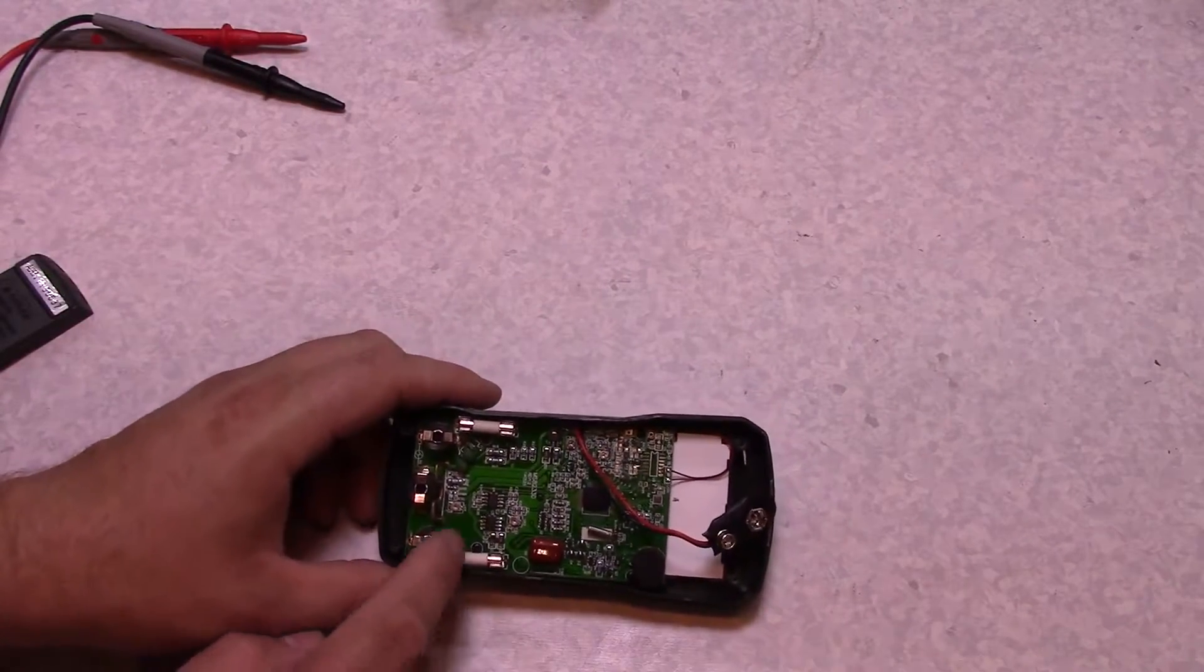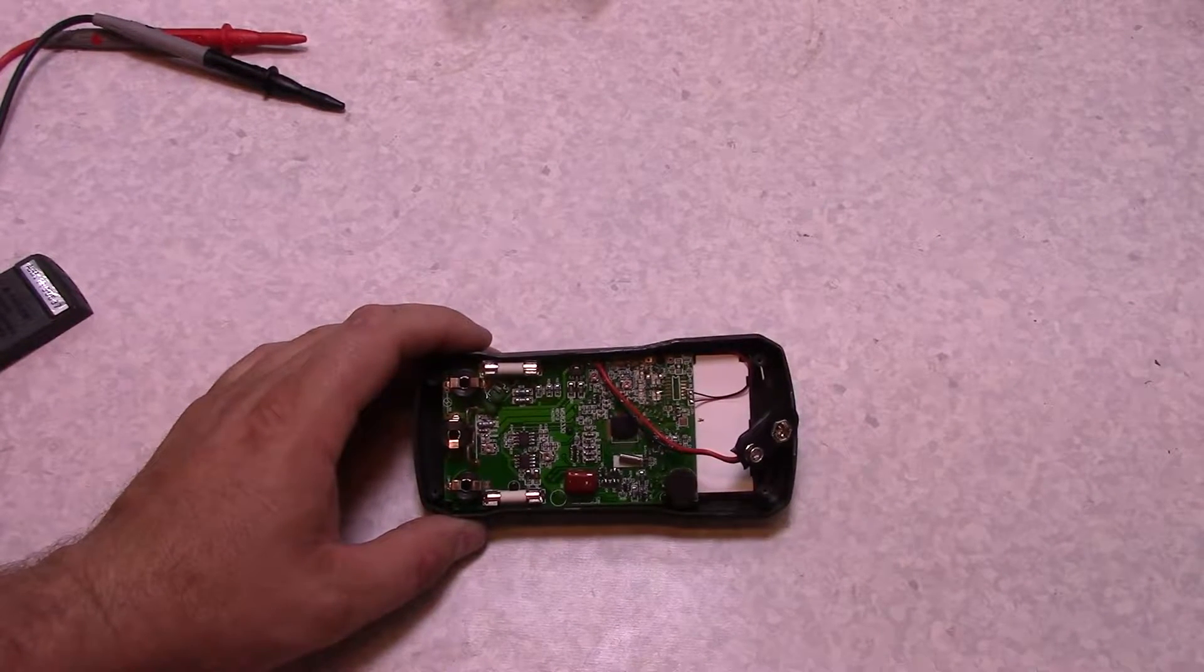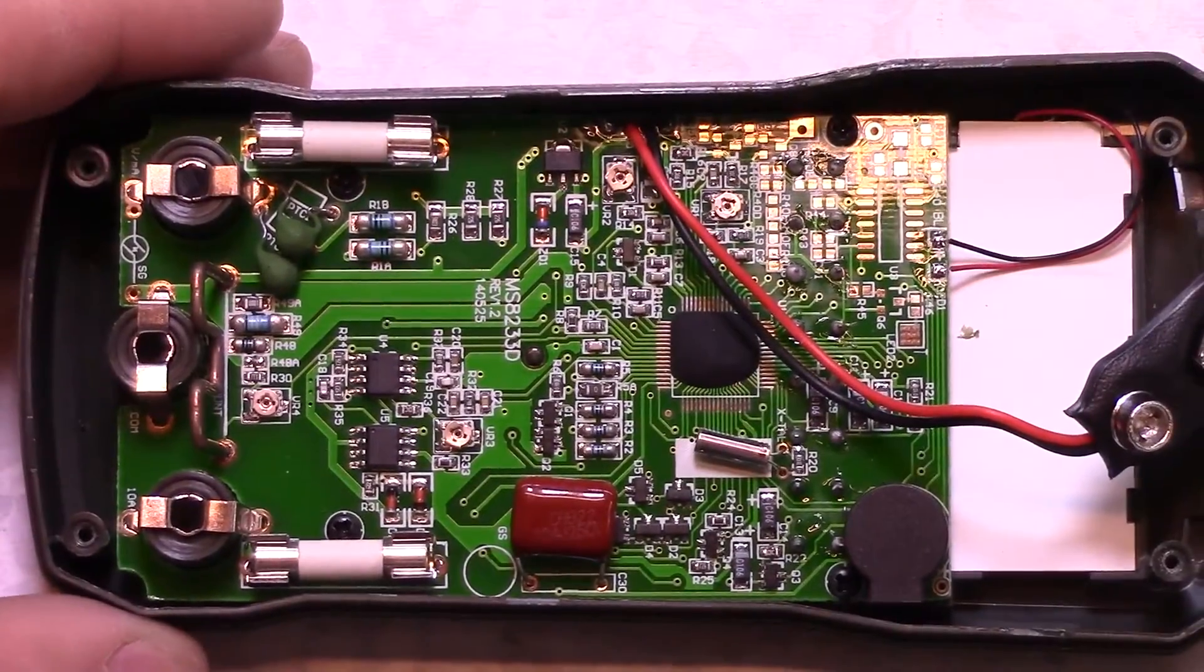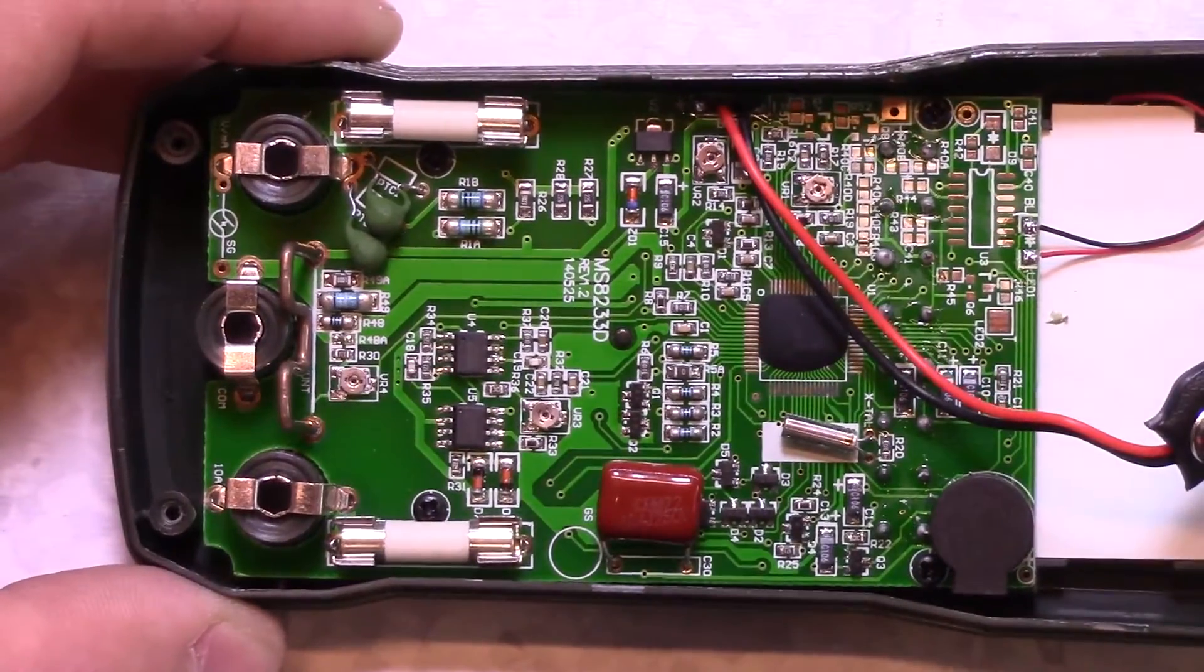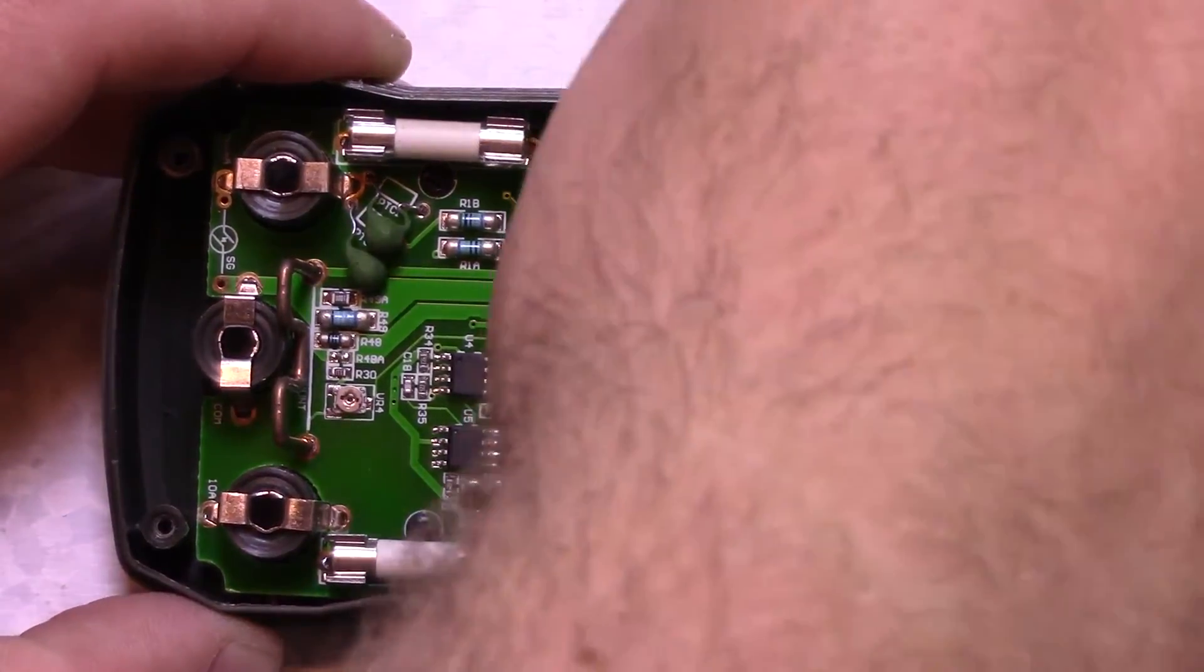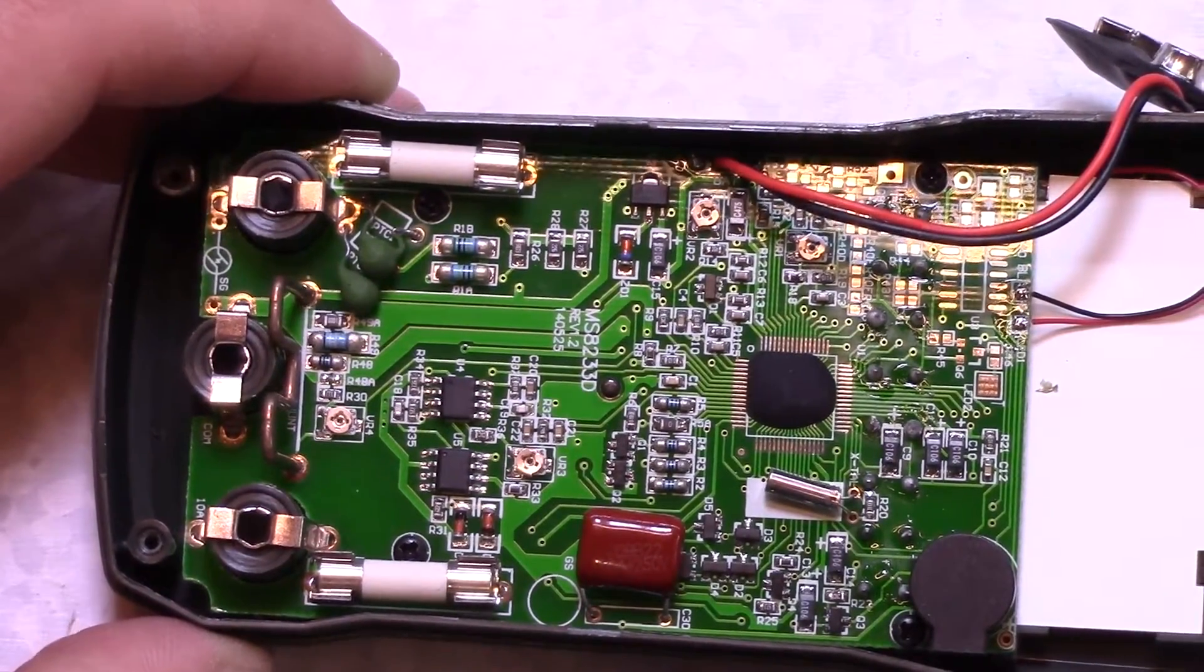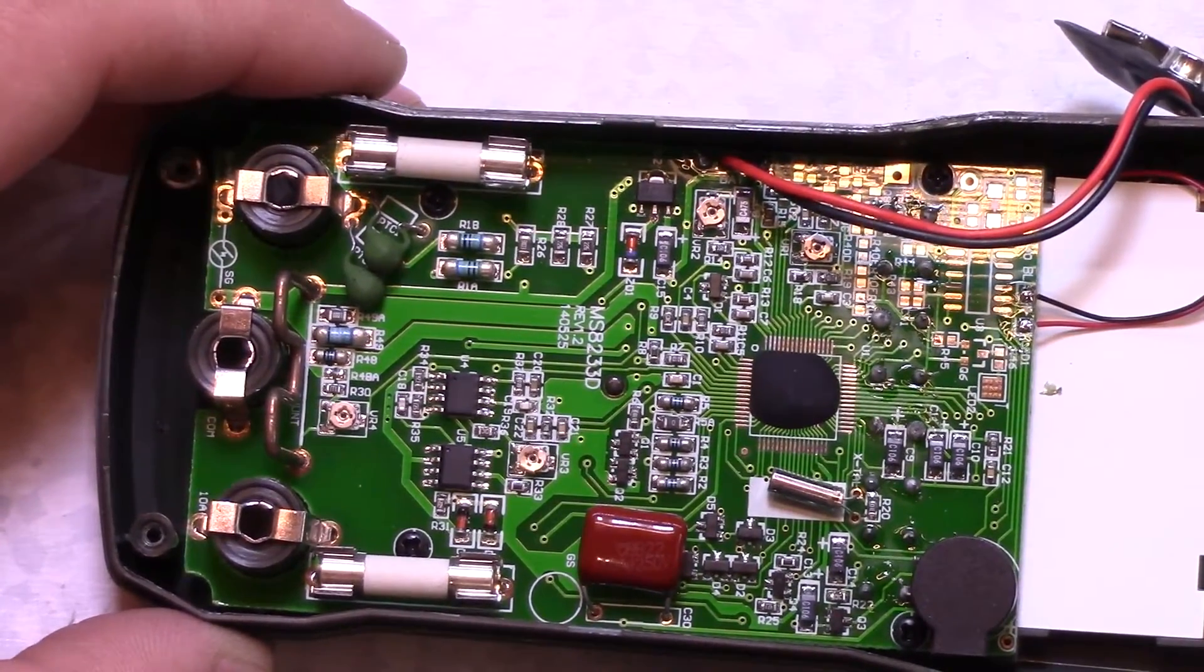So, there we go. And we're in. So, we do have a pair of ceramic fuses. They are not the large high rupture capacity. Wasn't really expecting that. Maybe I'll zoom in a bit here on that board. The board actually is surprisingly clean looking for this price point. I was expecting to see a much sloppier job.